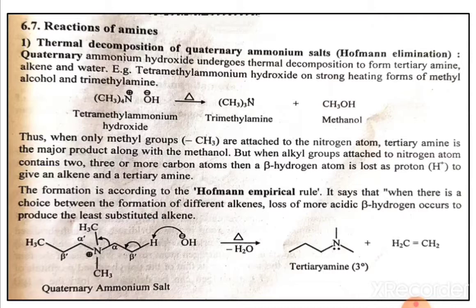When nitrogen is attached to alkyl groups with more than one carbon atom, the beta hydrogen atom is lost. This beta hydrogen is lost according to the Hoffman empirical rule. The Hoffman empirical rule states that when there is a choice between the formation of different alkenes, loss of the more acidic beta hydrogen occurs to produce the least substituted alkene.